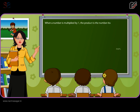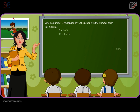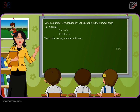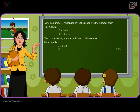Properties of multiplication: When a number is multiplied by 1, the product is the number itself. For example, 3 × 1 is equal to 3, and 15 × 1 is equal to 15. The product of any number with 0 is always 0. For example, 2 × 0 is equal to 0.